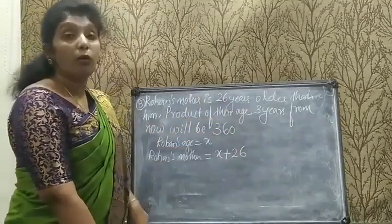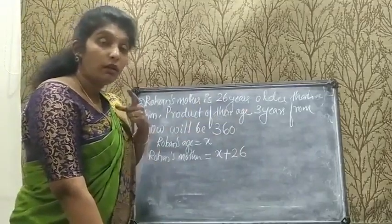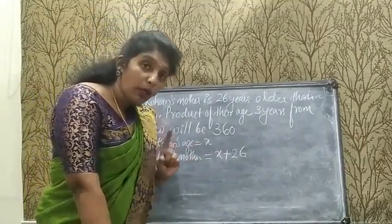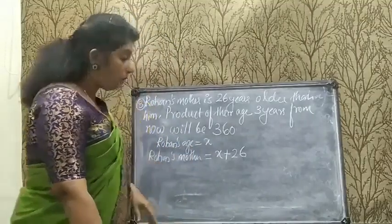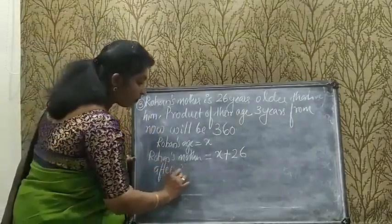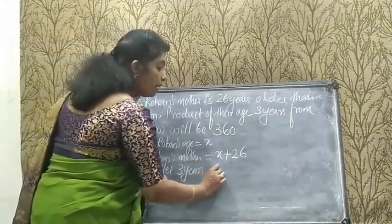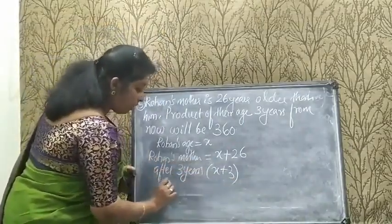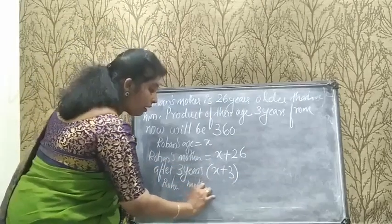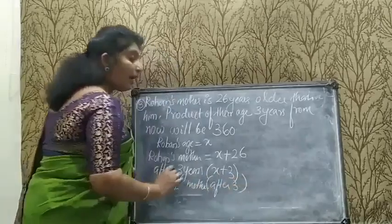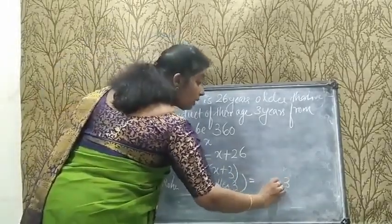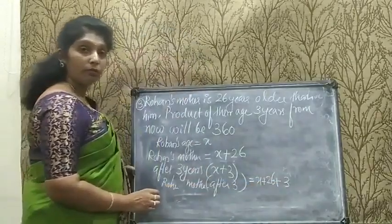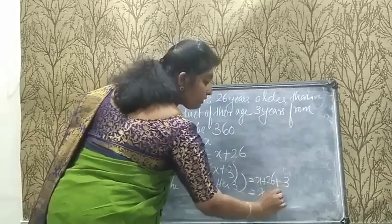3 years from now means their ages will increase by 3. After 3 years, Rohan's age will be x + 3. Rohan's mother's present age is x + 26, so after 3 years her age will be x + 26 + 3 = x + 29.